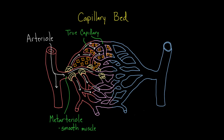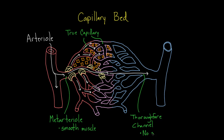Some of the blood is going to stay in the metarteriole and go through to the other side, where the name changes. It's now called the thoroughfare channel. The distinction between the thoroughfare channel and the metarteriole is that the thoroughfare channel does not have smooth muscle — that's the key difference. This side is becoming more like a venule, and as blood exits and goes back toward the heart, it meets up with other blood returning — that's the venule, or vein side.